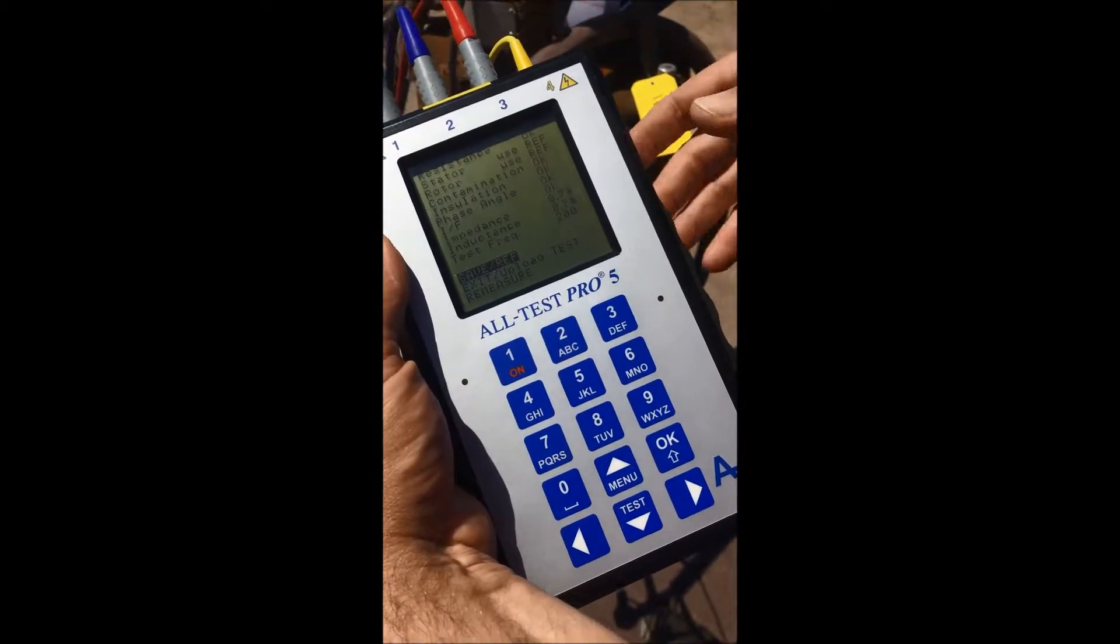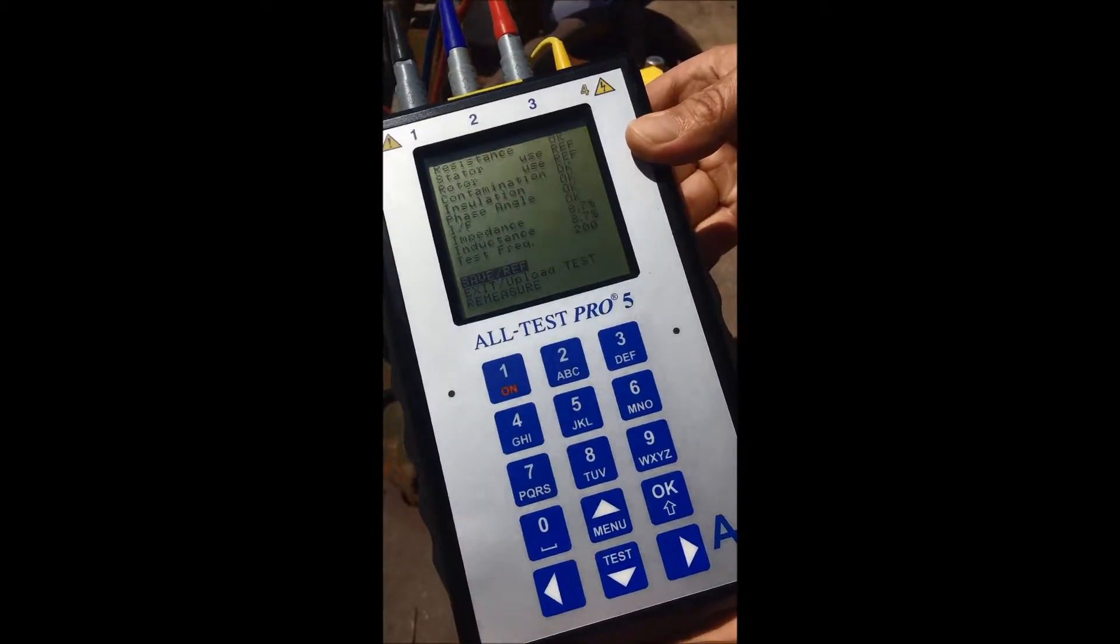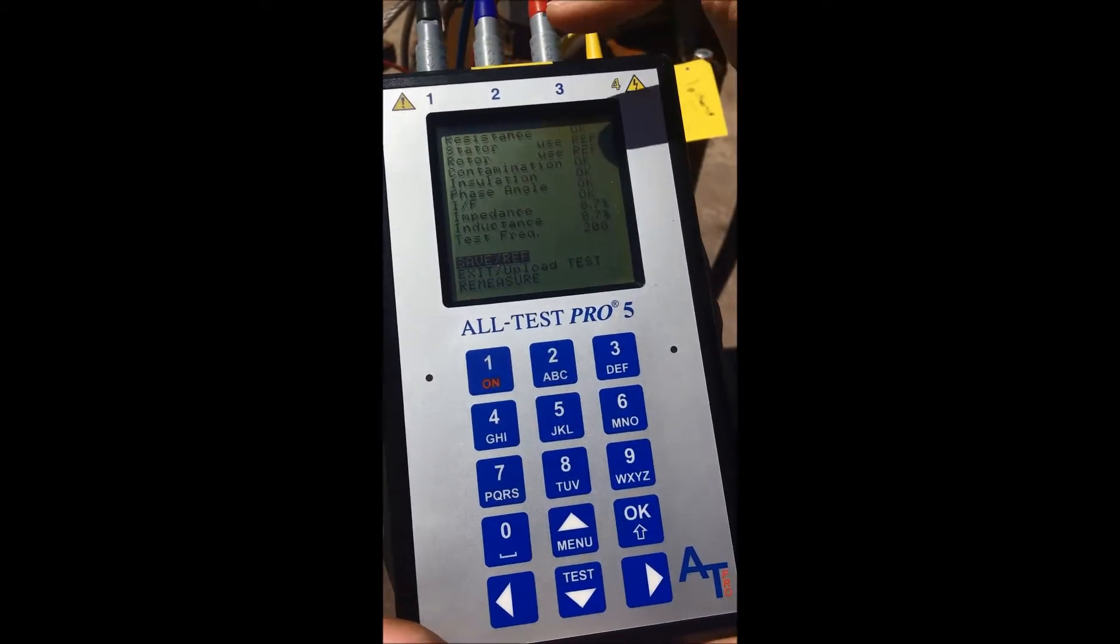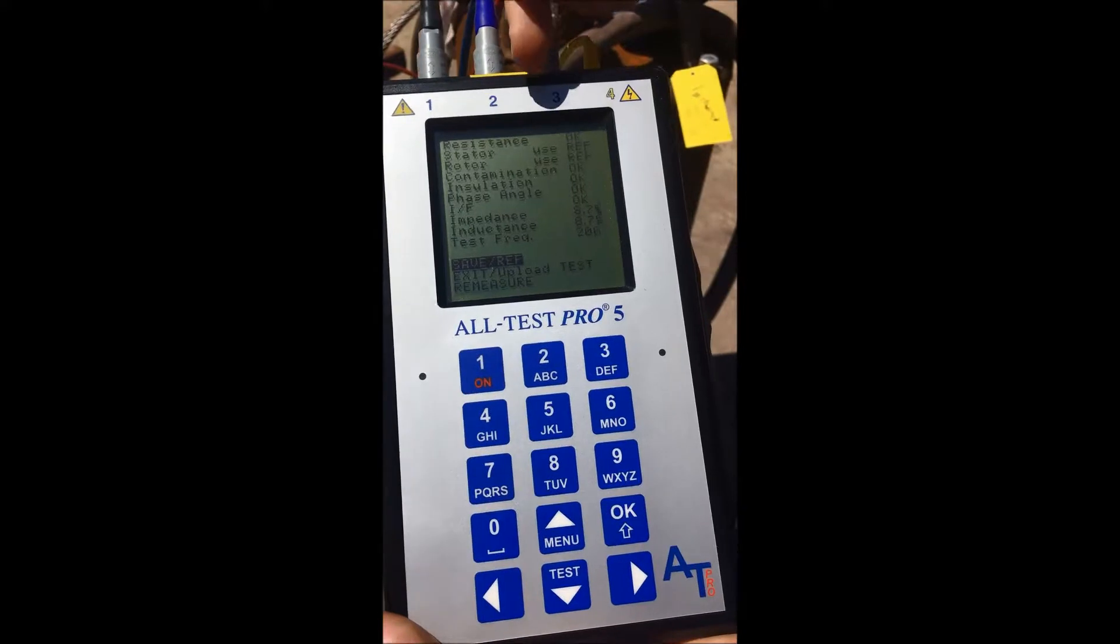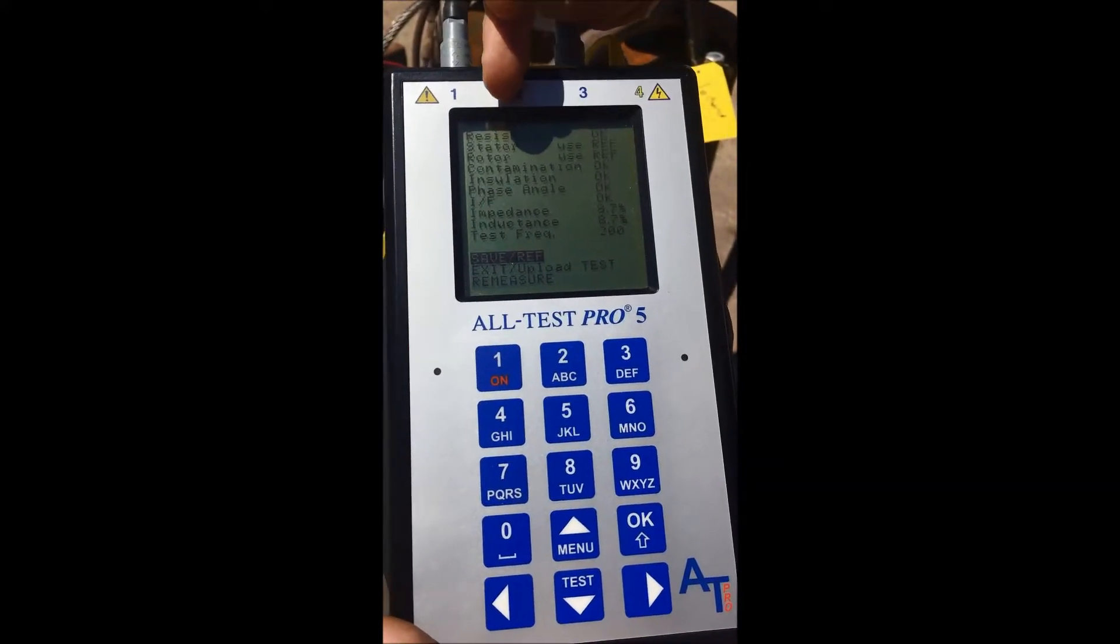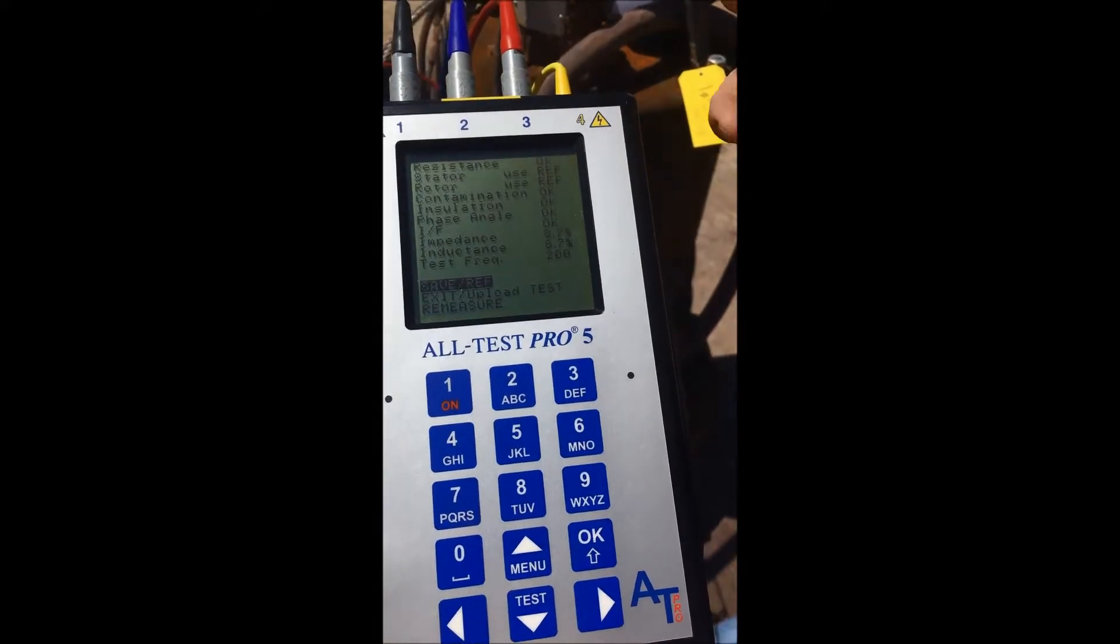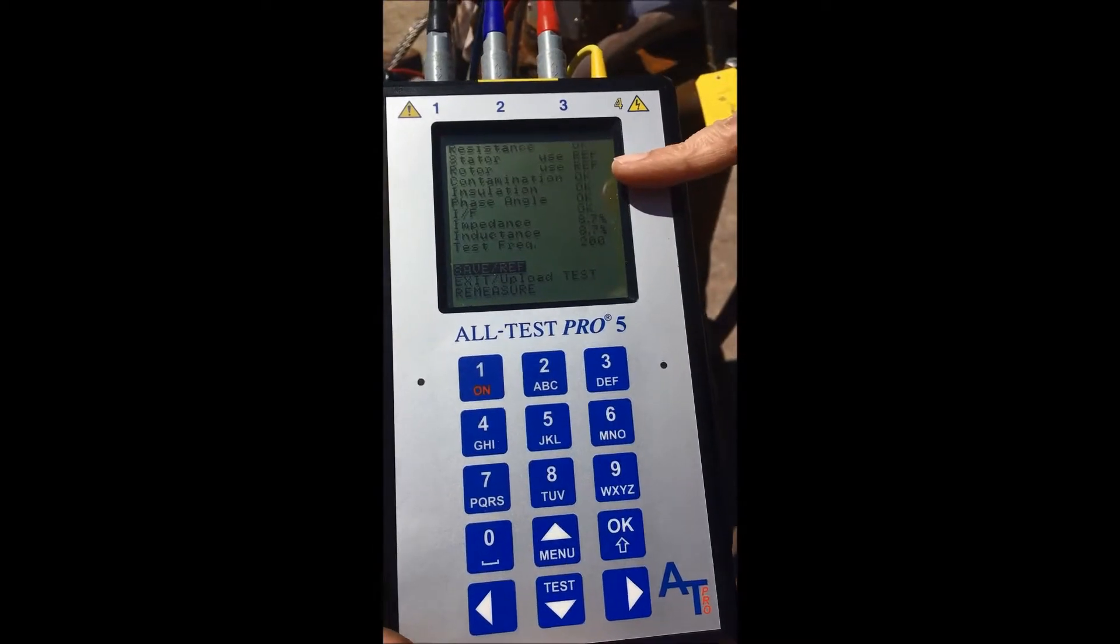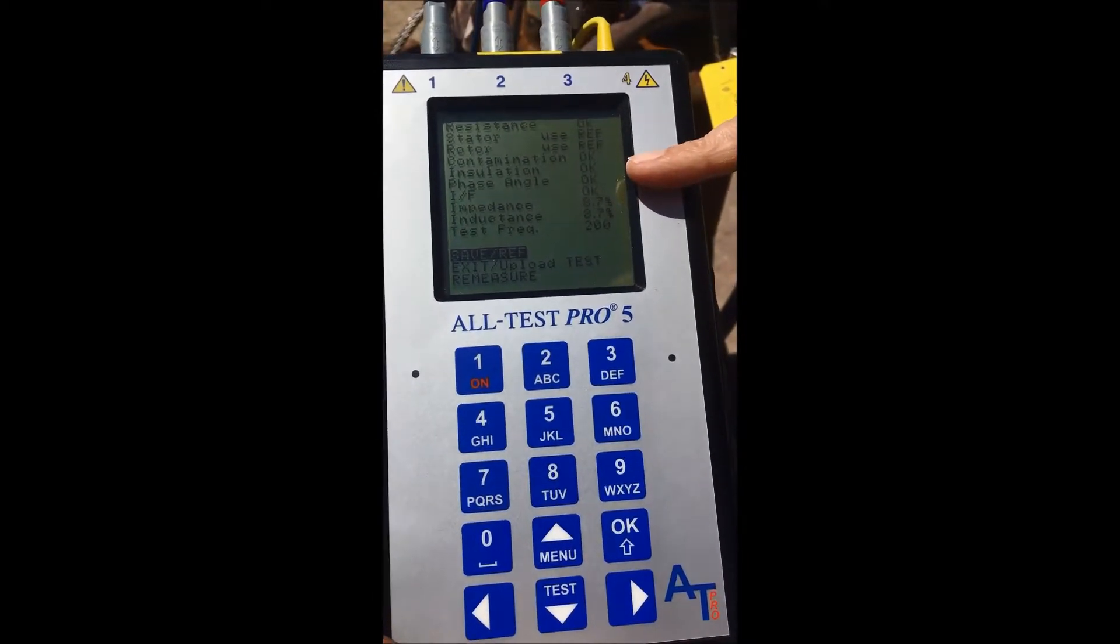We now have the final results here for this test, the Z Phi test. And we can see our categories. We just checked resistance. We did not check the stator and the rotor. We need to be able to spin the shaft to check our stator and rotor. We have contamination, insulation, phase angle, impedance factor, and inductance. So those are all the tests.